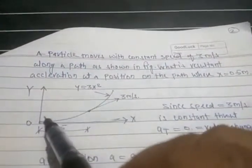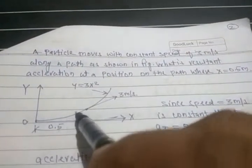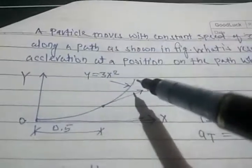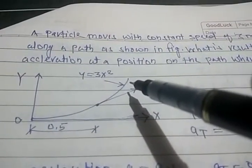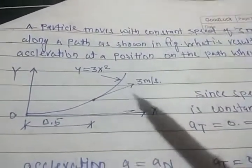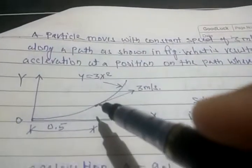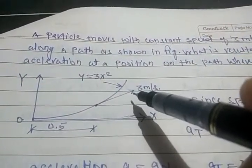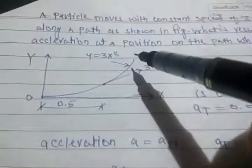This is the diagram with x and y axes. This is the path of the particle, where y equals 3x² is the equation. When the particle is at this point, it has a velocity of 3 meters per second, and since it has constant velocity, v is constant all along the curve.